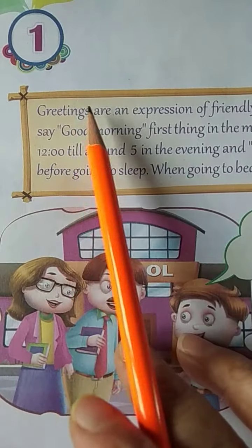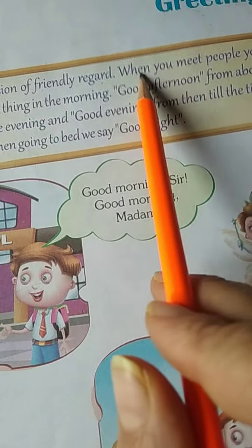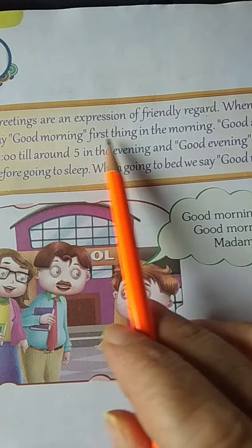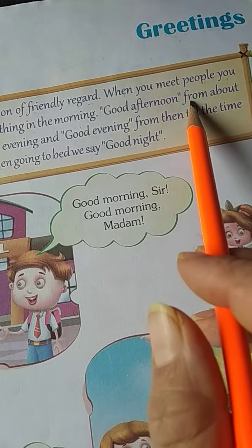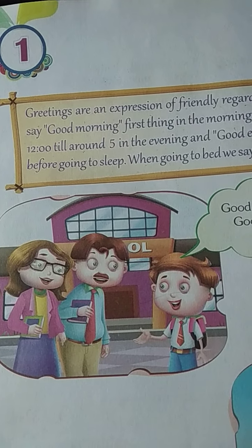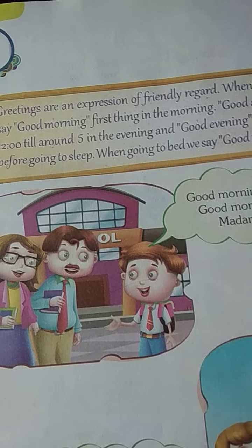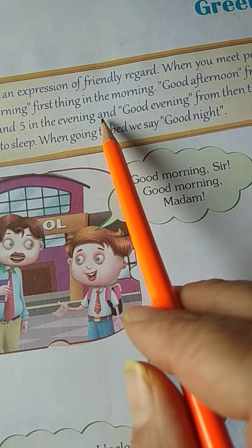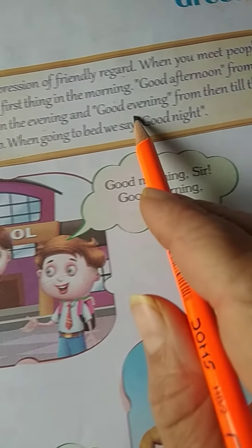Let's start reading. Greetings are expressions of friendly regards. When you meet people, you say good morning — first thing in the morning. Good afternoon from about 12 till around 5. जब 12 o'clock के बाद का टाइम होते हैं, तो उसके बाद क्या बोलते हैं? Good afternoon.